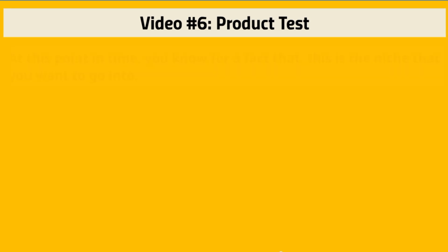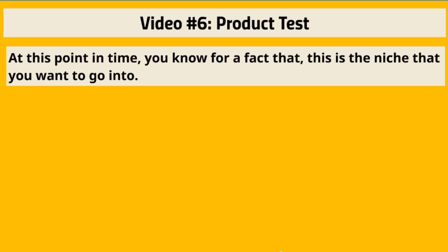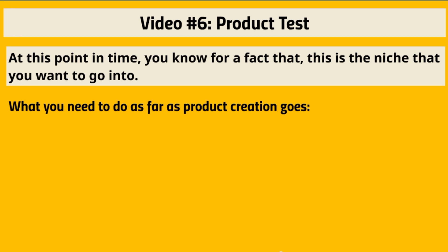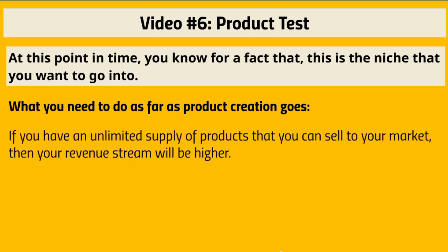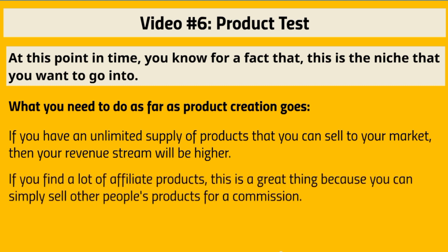Hello and welcome to video six — the product test. At this point you know which niche you want to enter, but we need to make sure you can actually profit from your blog. You need to figure out if you have an unlimited supply of products to sell, because the more products you have, the higher your revenue stream will be.